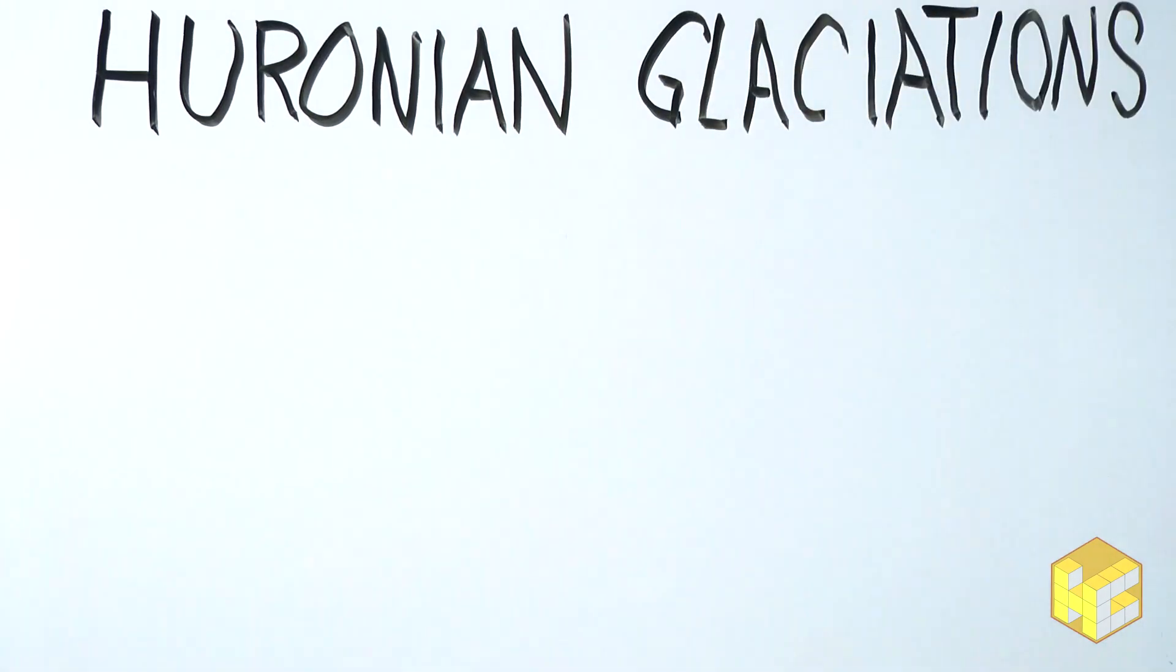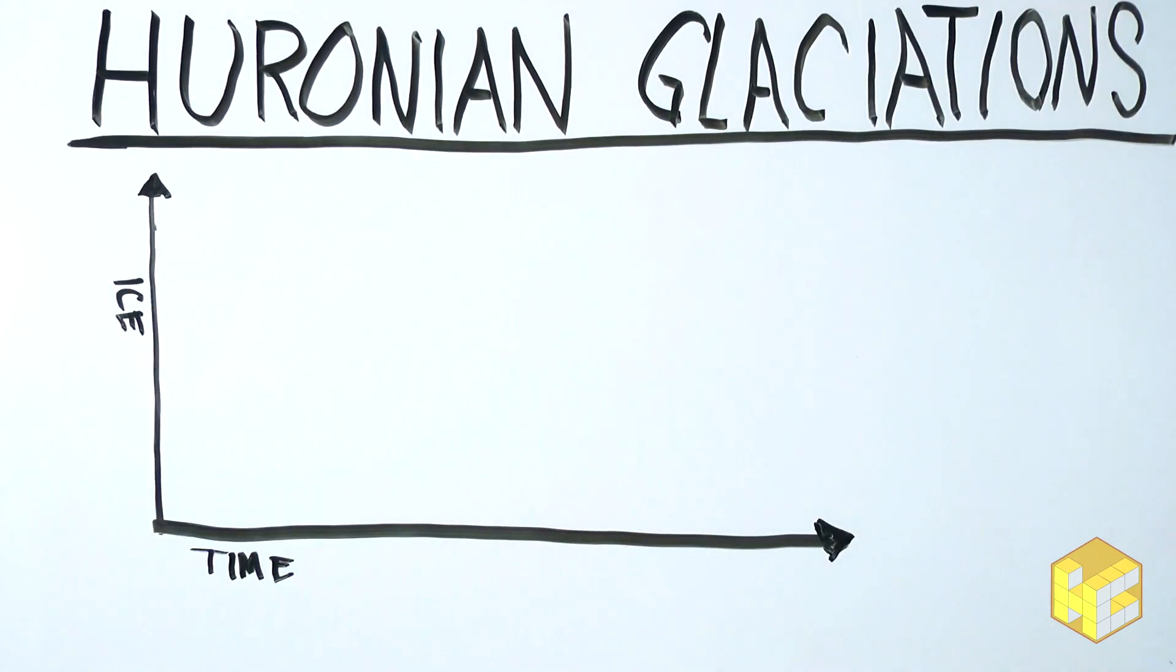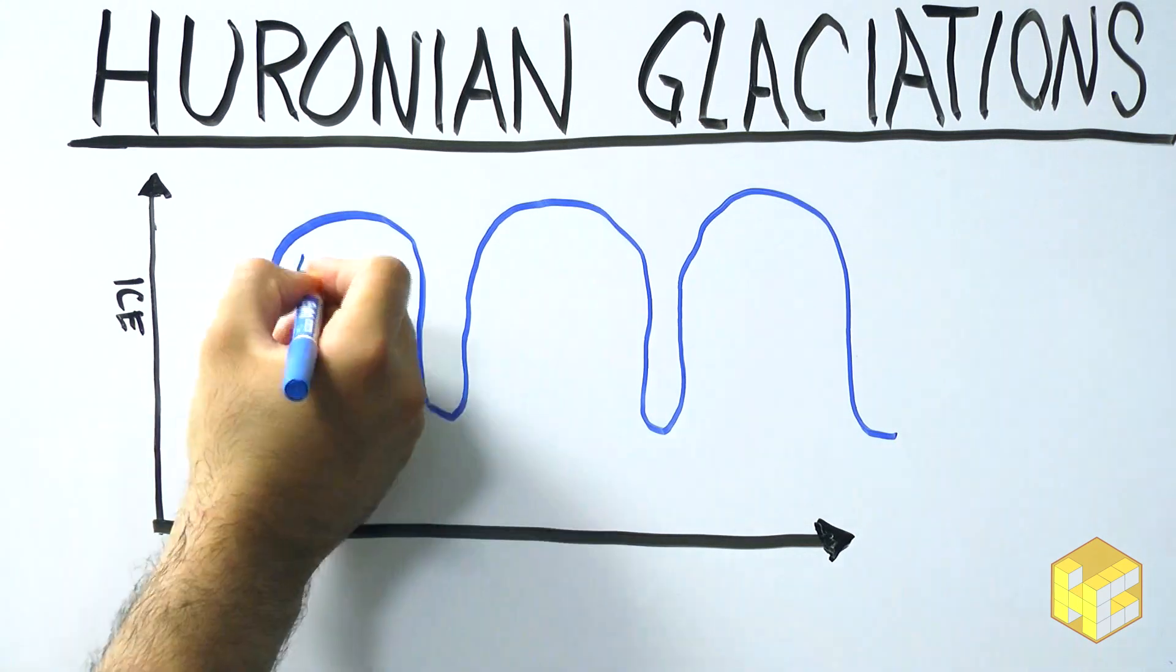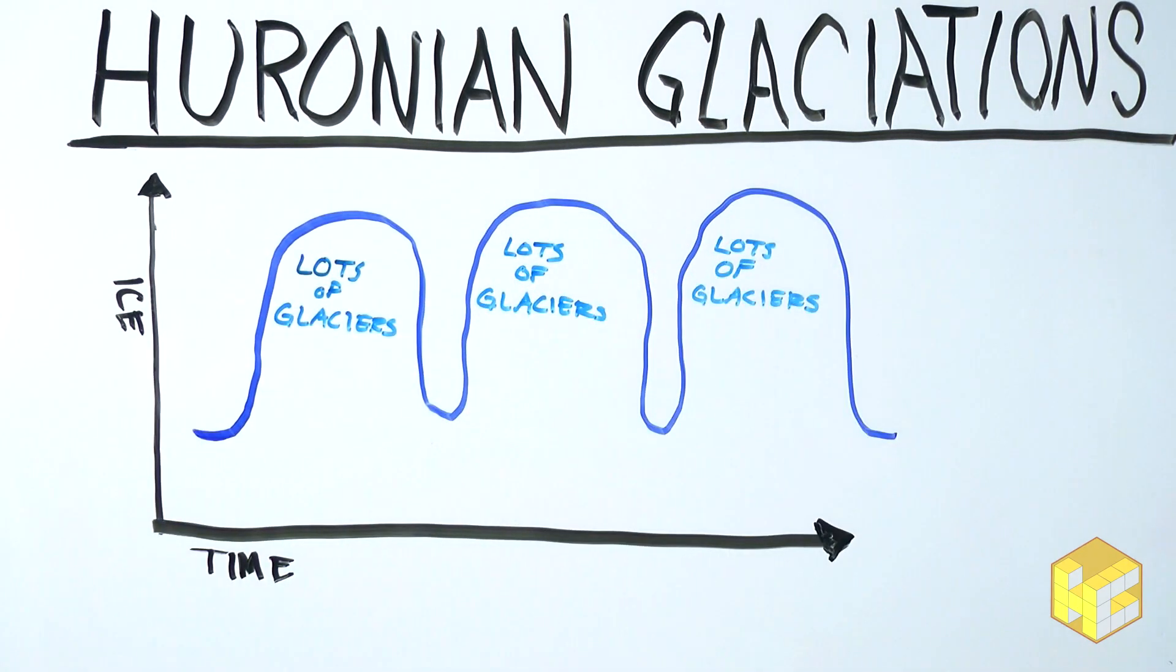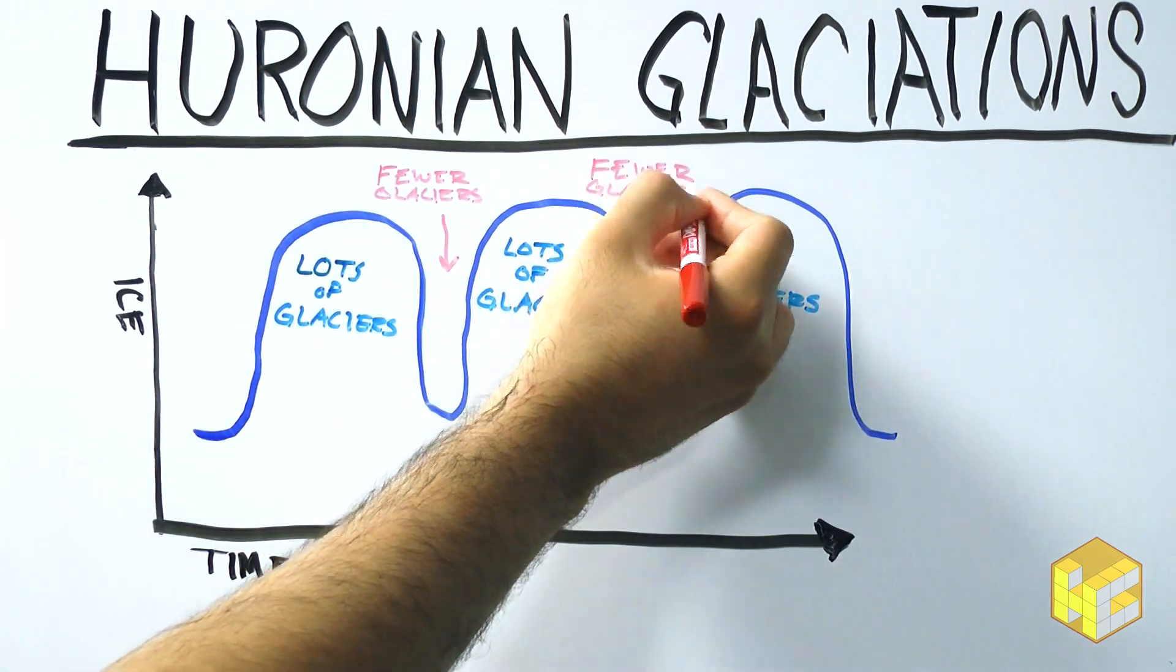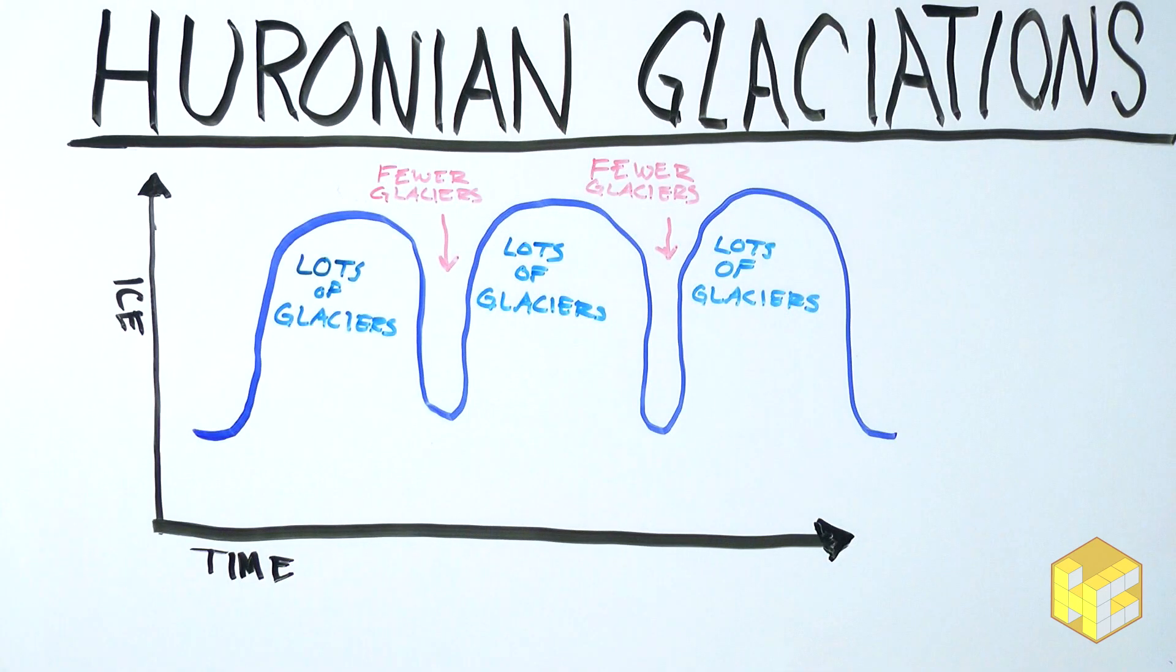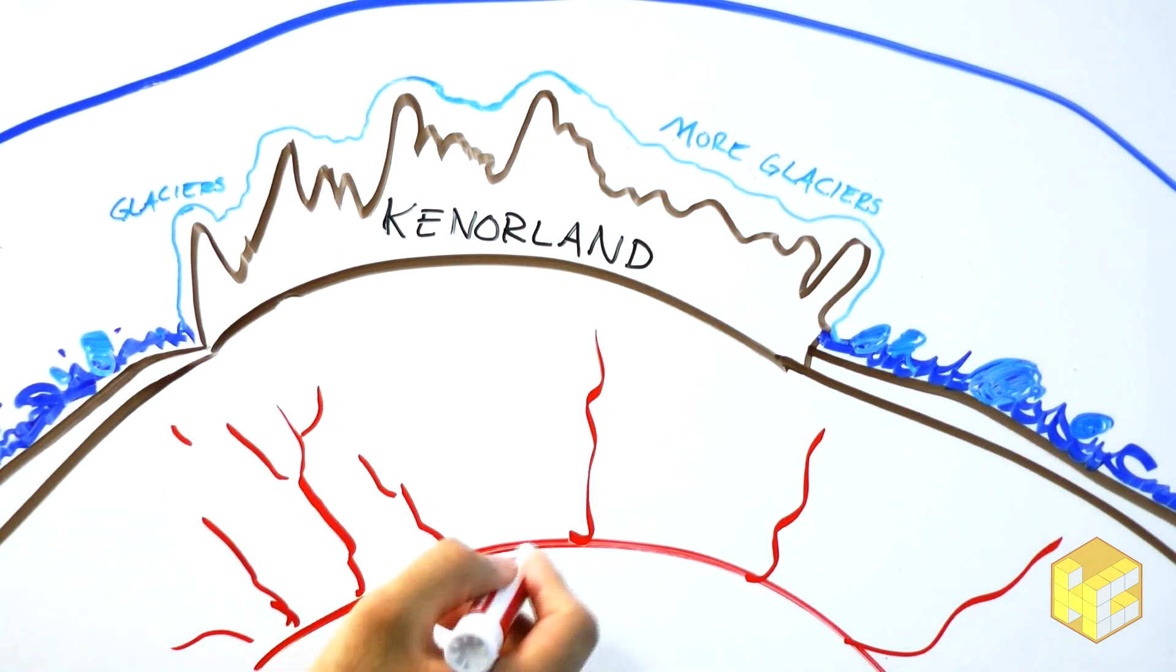The first snowball Earth was actually a series of glacial and warming cycles referred to as the Huronian Glaciations. The periods of glaciation reduced weathering, allowing carbon dioxide to build up, resulting in a brief warming period before the next glaciers descended. The Huronian Glaciations were ended by the breakup of Kennerland.